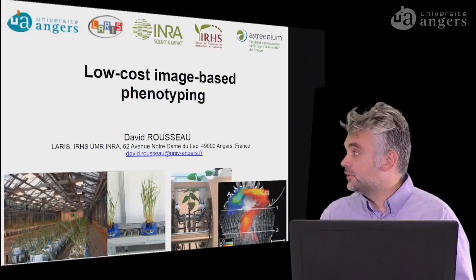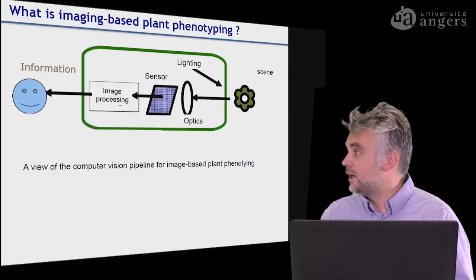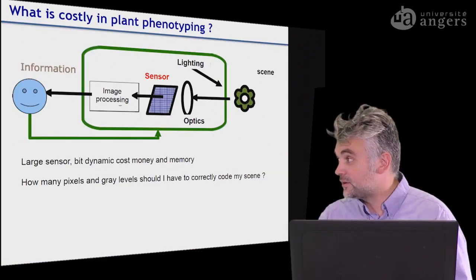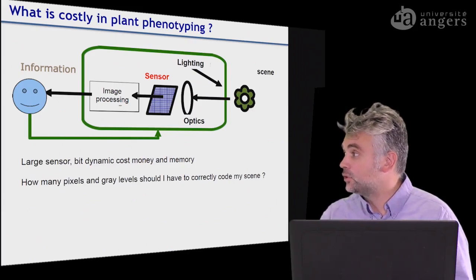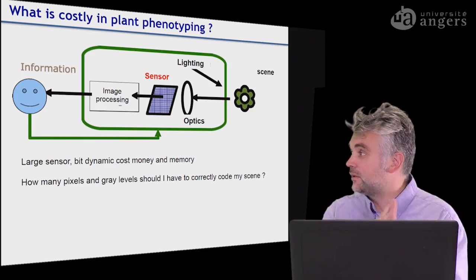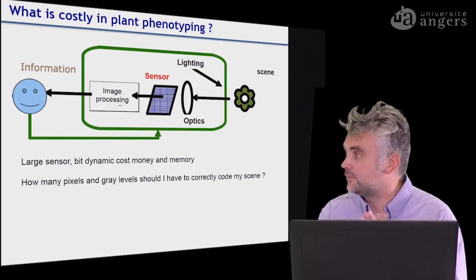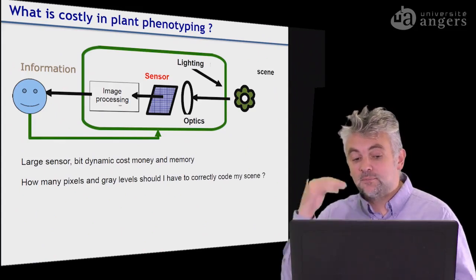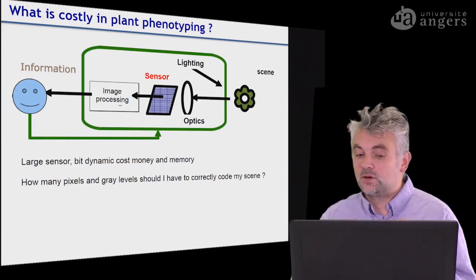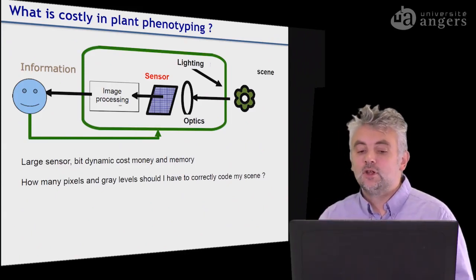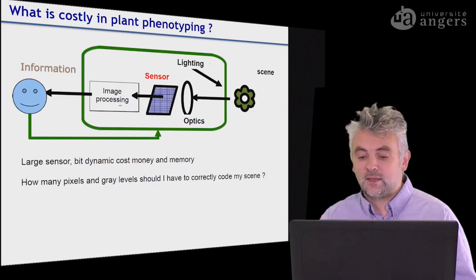Let's continue and move to the sensor approach. We already processed the light, the scene, and the optics, and now let's consider the cost of the sensor itself. If you select large sensors with a high bit dynamic range, it will also have an impact on the cost of your system, and you should ask yourself how many pixels and how many gray levels you need to correctly encode your scene.